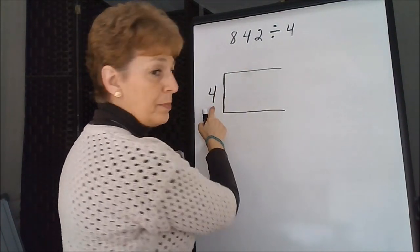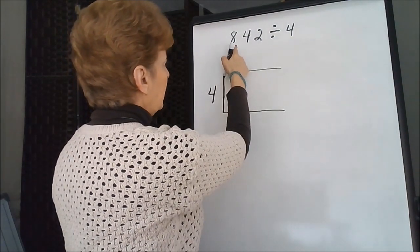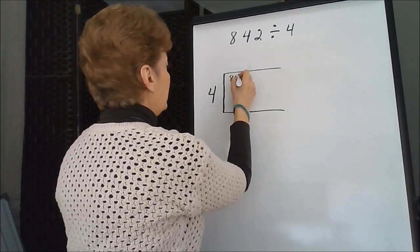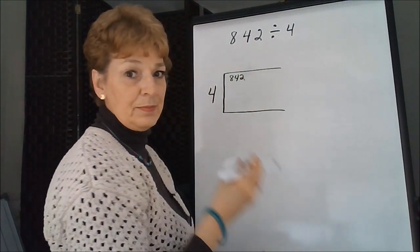We're going to take our divisor outside of the box and put 842 in the box this time instead of along the side as we've done before.